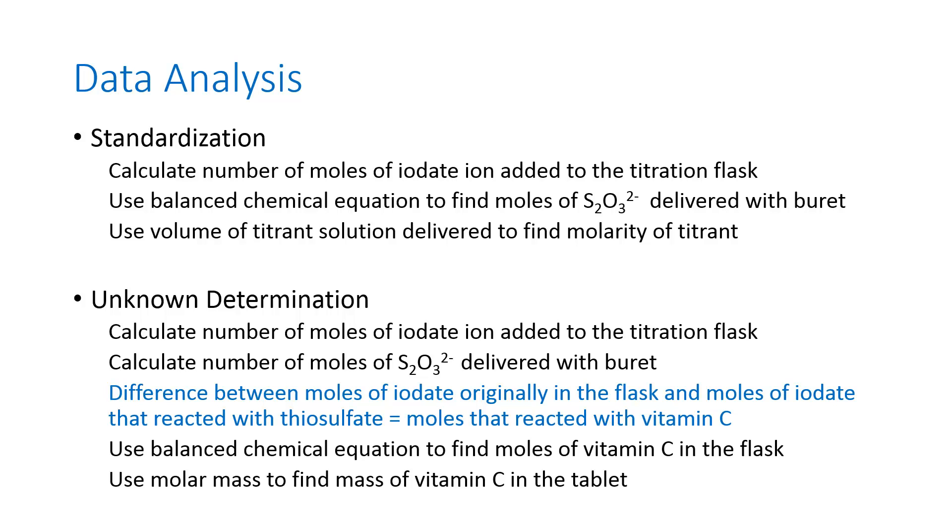So the difference between the number of moles that you originally added with the 50 ml pipet and the number of moles that you titrated away with the thiosulfate titrant is the number of moles that reacted with vitamin C. So you have moles of iodate that reacted with vitamin C, and then you can use a balanced chemical equation to find the moles of vitamin C that did that reacting. Your final step is going to be to use your molar mass to find the number of grams, or milligrams, of vitamin C that were in the tablet, the entire tablet, but not just the amount that you pipetted into the titration flask.